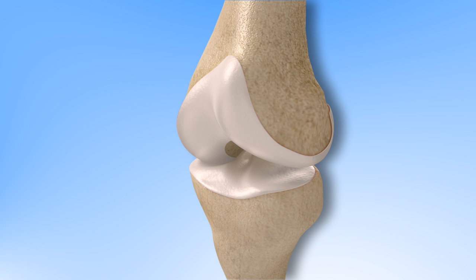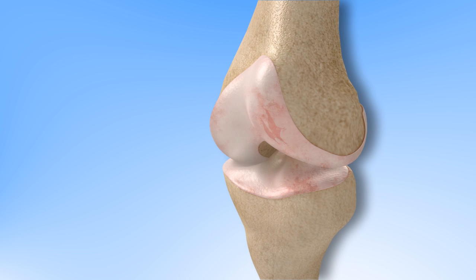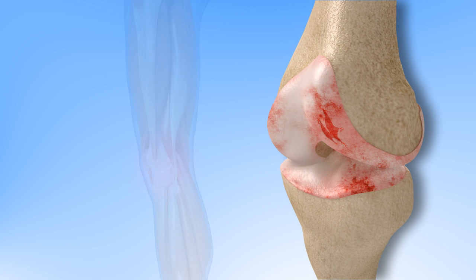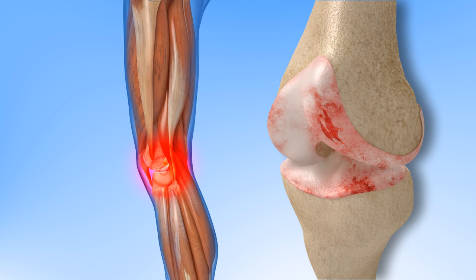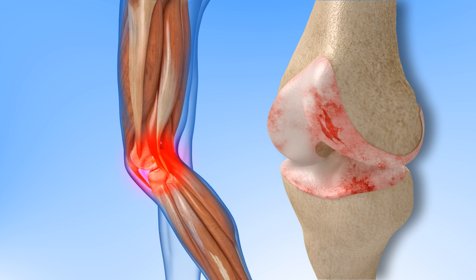Cartilage acts as a shock absorber to cushion and protect your joints. The cartilage can break down due to injury from arthritis and tears, causing pain, swelling, and restrictions in range of motion. This can prevent you from carrying out your daily activities and enjoying life.